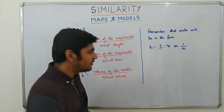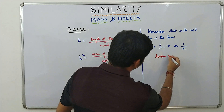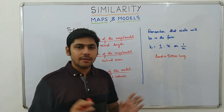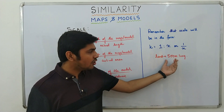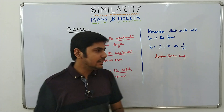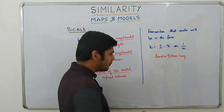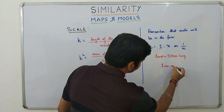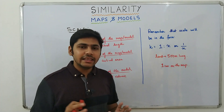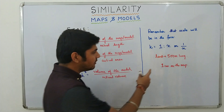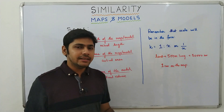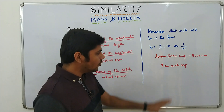Say for example you own a land which is 500 meters long, and you want to represent this land on a map. You won't be able to find a paper which is 500 meters long, so you will try to contract or shrink this length so that it can be represented on a map. Say I represent this 500 meters of land by 1 centimeter on the map. That means 500 meters on the actual ground equals 1 centimeter on the map. Since 500 meters equals 50,000 centimeters, that means 50,000 centimeters on the actual ground equals 1 centimeter on the map.